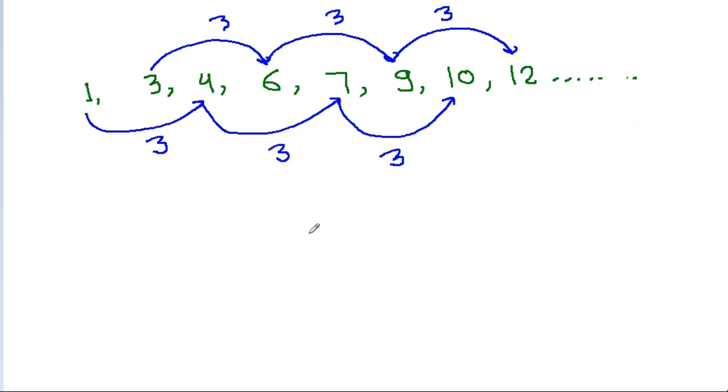So, we can make two sequences. First sequence is 1, 4, 7, 10 and so on. And the second sequence is 3, 6, 9, 12 and so on.